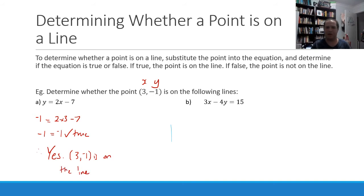Doing the same for our other equation, we're just going to sub in the same values. 3 times 3 minus 4 times negative 1. 3 times 3 is 9 plus, because you've got a negative times a negative, this will be positive 4. 13 does not equal 15. So therefore, for this line, no, (3, -1) is not on that second line because the equation is not true.